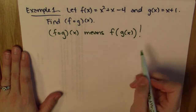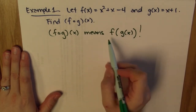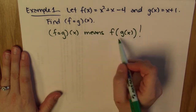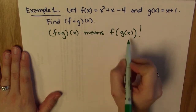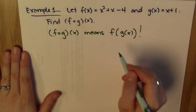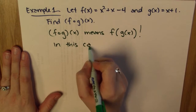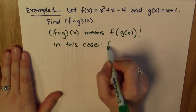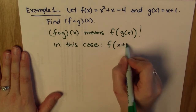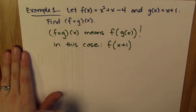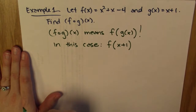F composed with g of x means that I take f of g of x. These instructions, if I understand what functions mean, say that f is being applied not to x but to the g of x function. So what I do is take g of x and plug it in to f everywhere I had the x. In this case, g of x is x plus 1, so I want to take f of x plus 1.